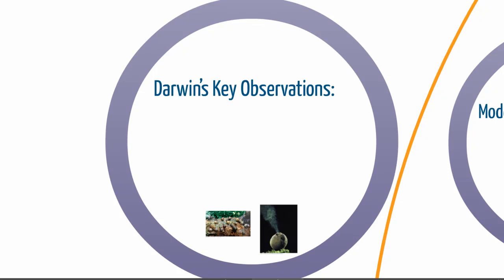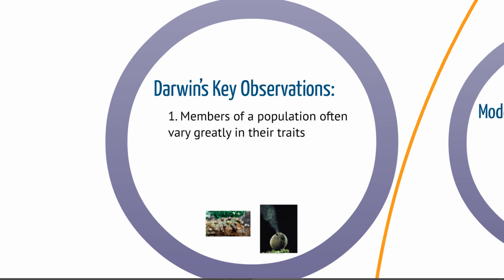Like all good scientific work, Darwin and Wallace built their theory on observations and carefully collected data — collected by both Darwin and Wallace and also other explorers. There are a couple of key observations that became the underpinnings for the theory of evolution by natural selection.